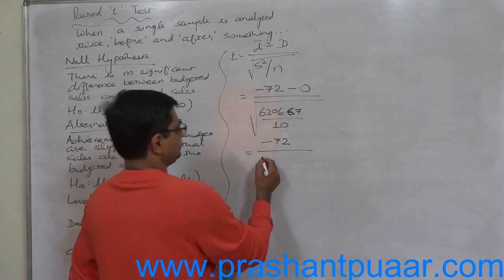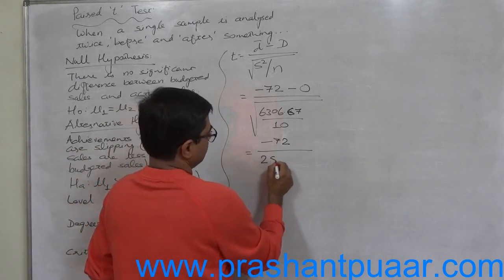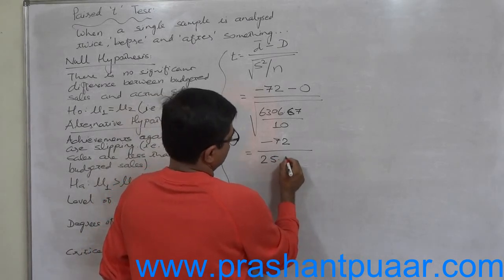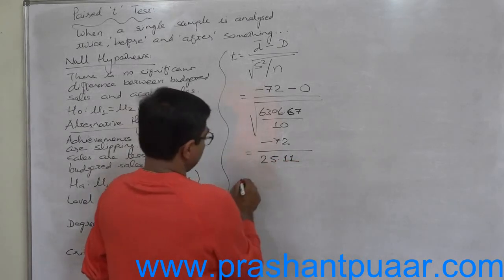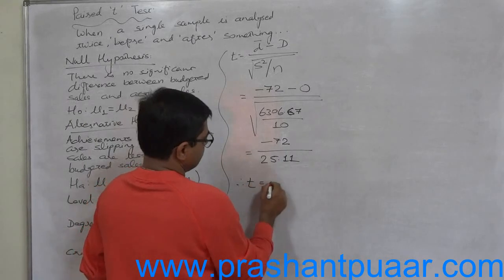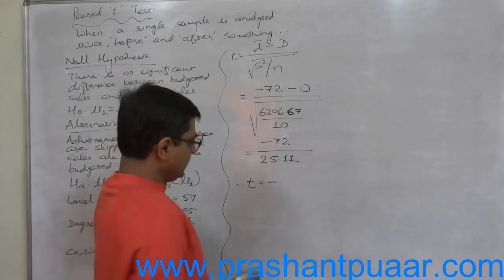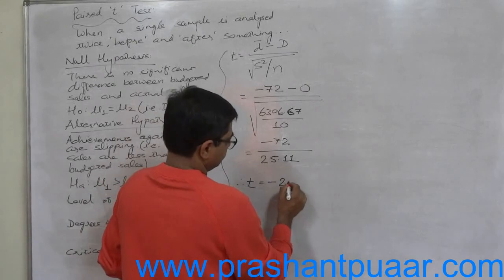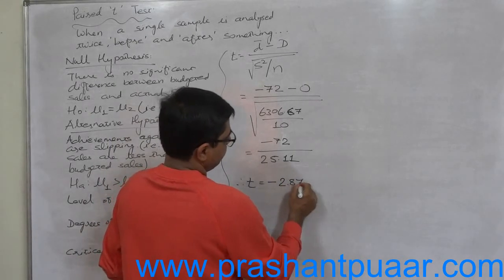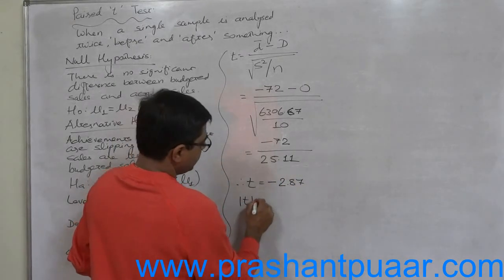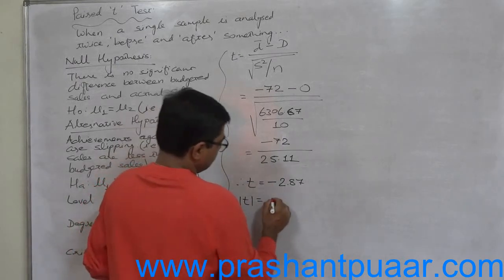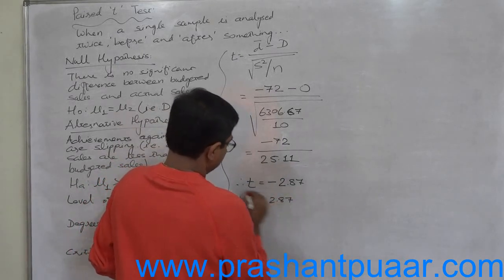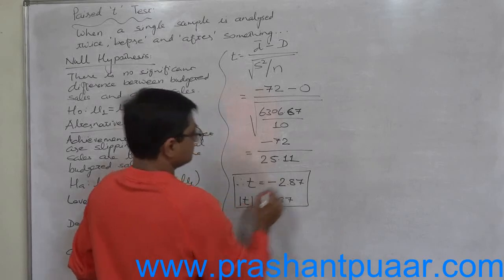What is it? 25.11. So t is negative 2.87. We are going to use the modulus: 2.87.